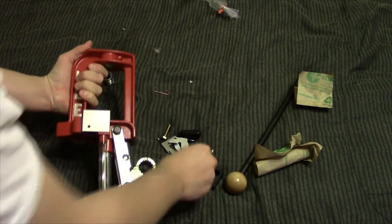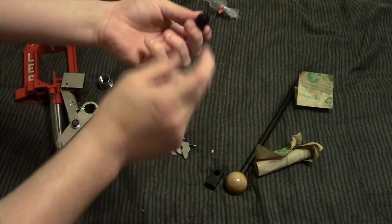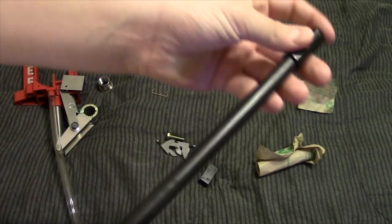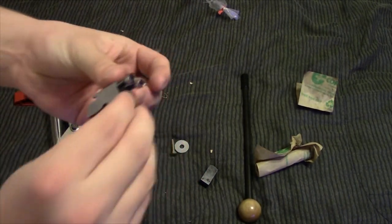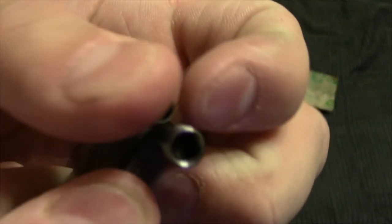So that goes on here with this screw. And then we've got this cap, which looks like it might cover this, I'm not entirely sure. We've got our two primer seaters, so for small and large primers, obviously.